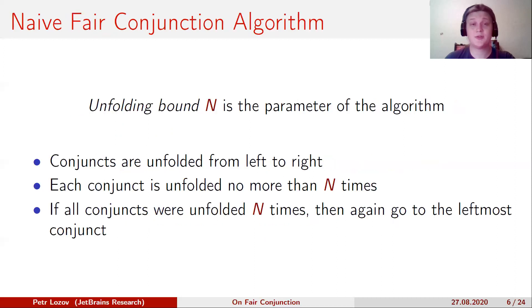First of all, our algorithm has a parameter: the unfolding bound N. Conjuncts are evaluated from left to right. But after N steps, we stop evaluating the current conjunct and go to the next conjunct.